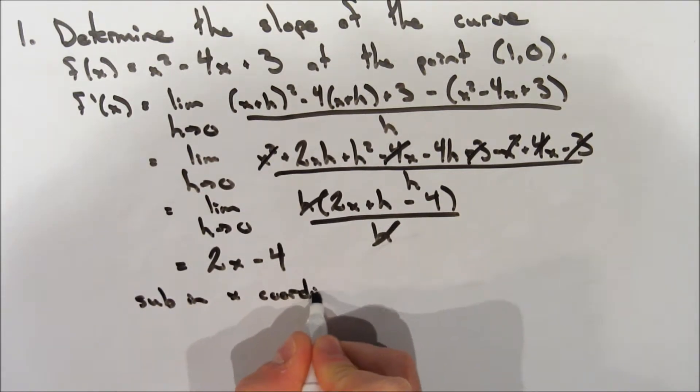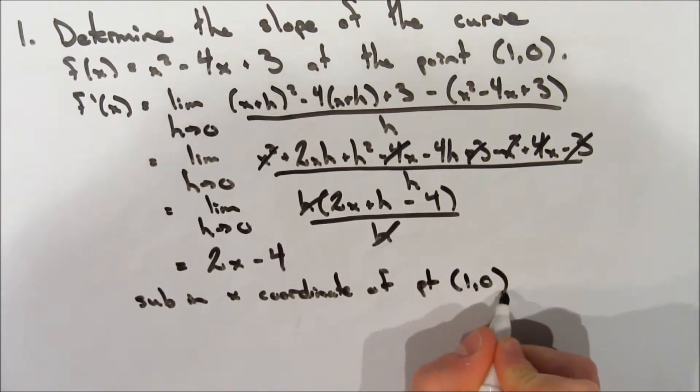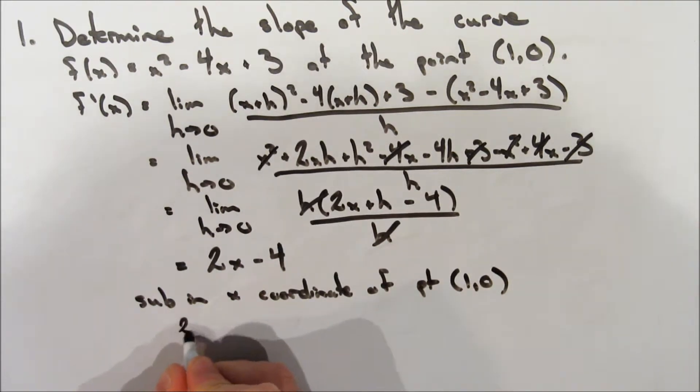So if you remember, our definition of a derivative, the derivative represents the slope of the curve at any point. So if we want to find the slope at a specific point, all we have to do is sub in the x coordinate of that point. So in this case, 1.